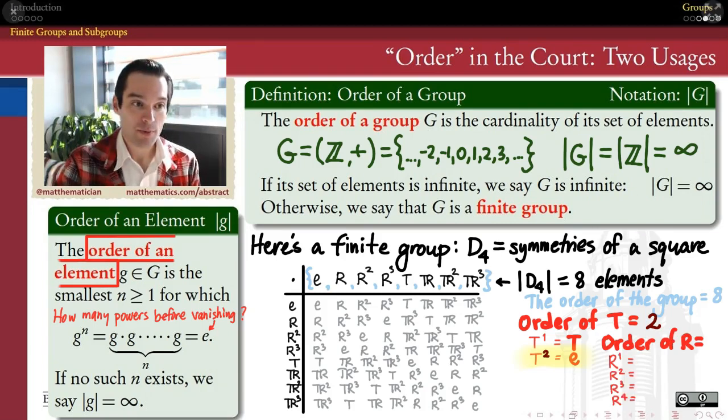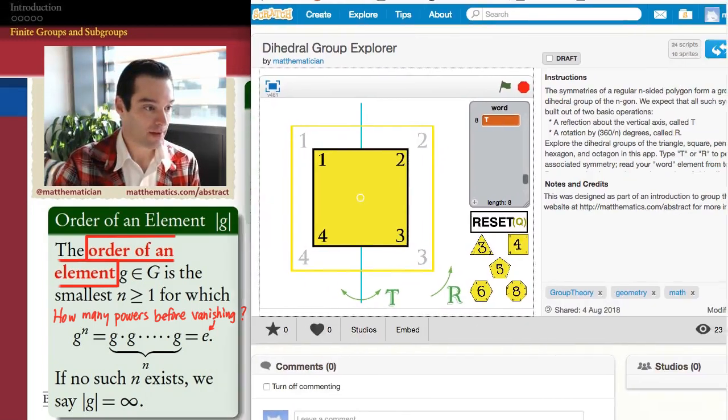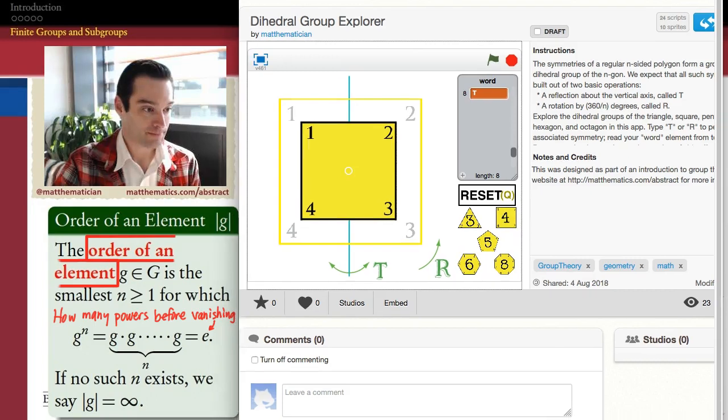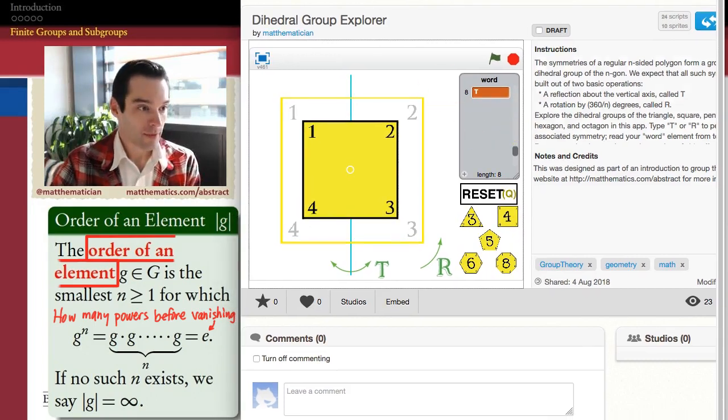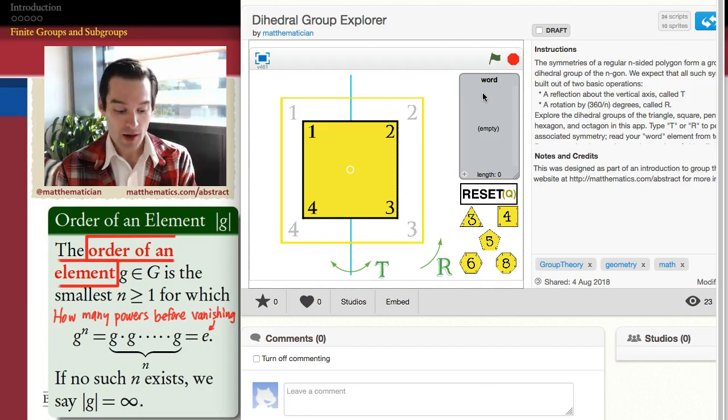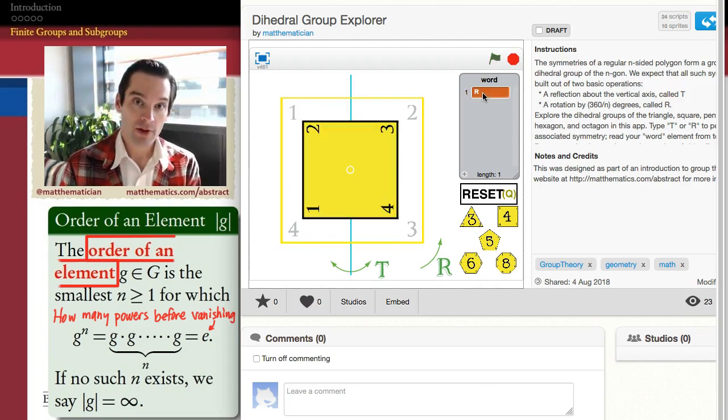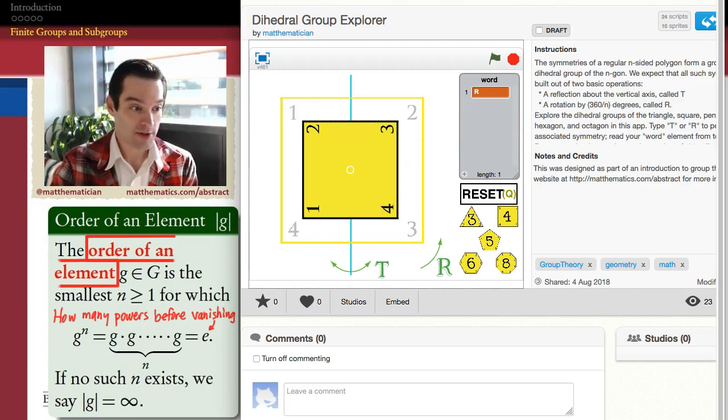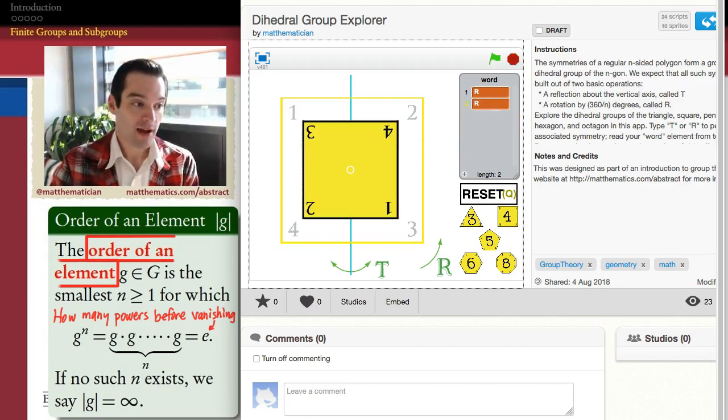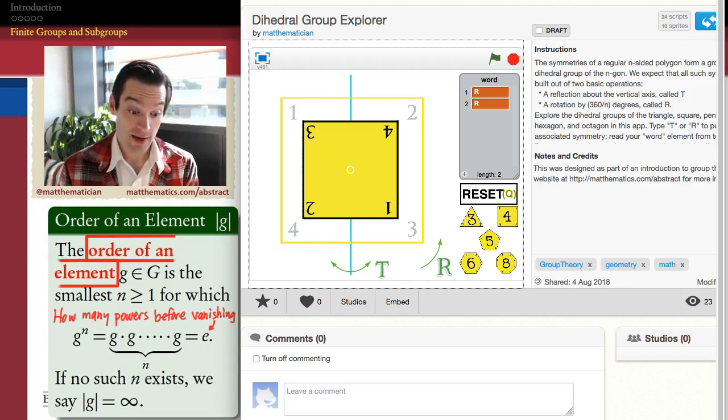Alright, so that's how t works. What about r? For r, if I apply r once, a rotation, then I've clearly done something that's not the identity. Again, my corners don't line up with where they originally started. If I do it a second time for this square, I'm still not back to the identity. If I do it a third time, I'm still not back to the identity.